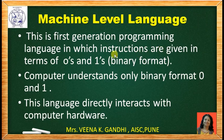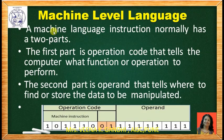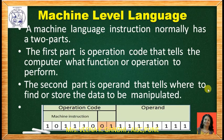Machine level language is the first generation programming language in which instructions are given in terms of 0s and 1s. It is in binary format. The computer understands only binary format — 0 and 1, on or off. This language directly interacts with computer hardware. Machine level language instructions are divided into mainly two parts: the first part is the operation code or opcode, which tells the computer what function or operation has to be performed; and the second part is the operand, which tells where to find or store the data to be manipulated.